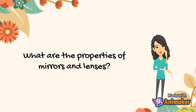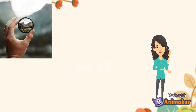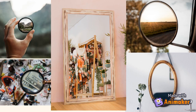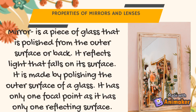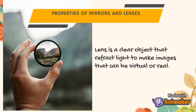What are the properties of mirrors and lenses? Lenses and mirrors have several applications in our day-to-day life. People often confuse these two devices as they look similar, but in reality, they are entirely different from each other in terms of purpose and usefulness. A mirror is a piece of glass that is polished from the outer surface or back — it reflects light that falls on its surface and has only one focal point. Whereas a lens is a clear object that refracts light to make images that can be virtual or real.